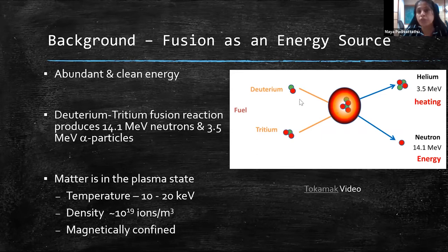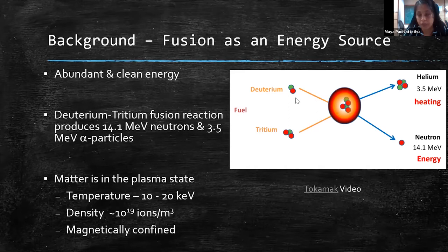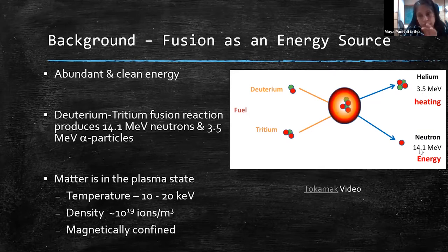In order to fuse them, we take them to very high temperature such that the electrons are stripped off and they get enough kinetic energy to overcome the electrostatic repulsion. When two deuterium and tritium nuclei are fused, we get energy in the form of helium — 3.5 MeV, which is a helium nucleus with two protons and two neutrons — and a single neutron with 14.1 MeV energy.